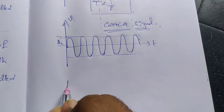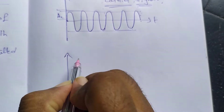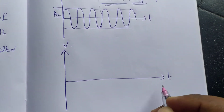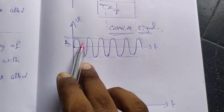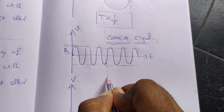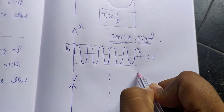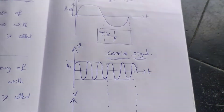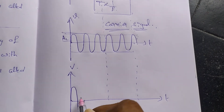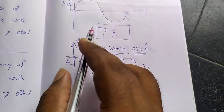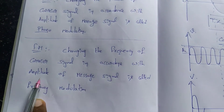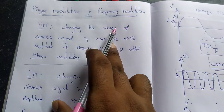Now, modulated signals — PM and FM. I will show you the modulated signal. In this position, the starting position is 0, which is constant. Based on the message signal amplitude, the carrier signal frequency and phase will vary.